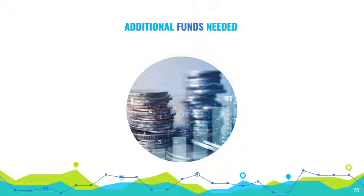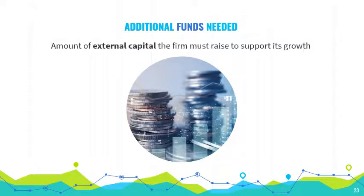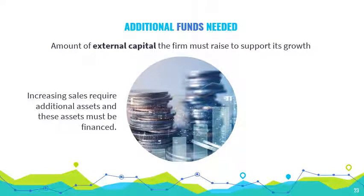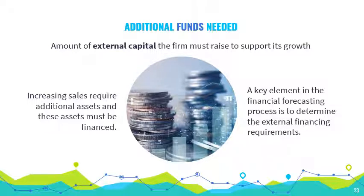Additional funds needed, or AFN, is the total amount of external financing needed to support a company's growth. An increase in sales typically requires an increase in assets, and these assets are financed either internally and/or externally. Internal sources include spontaneous liabilities and retained earnings. If internal sources are not enough to support a company's growth, the company needs to obtain external financing.